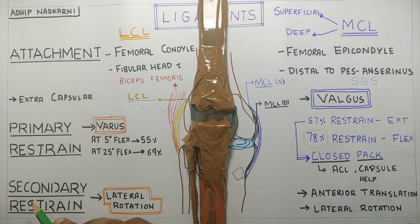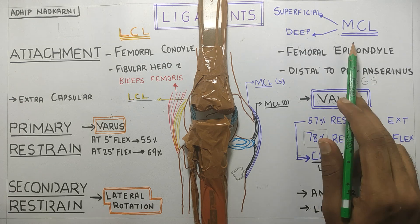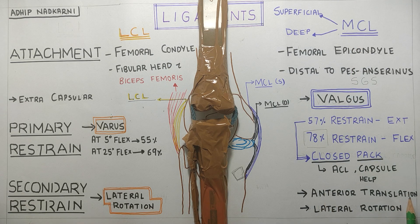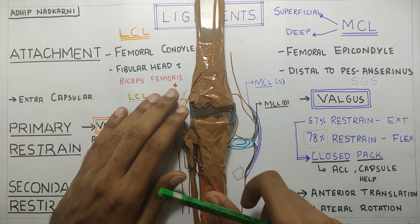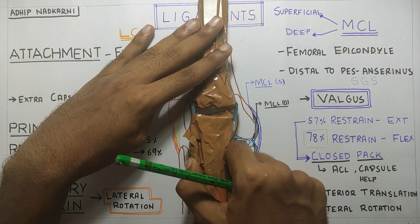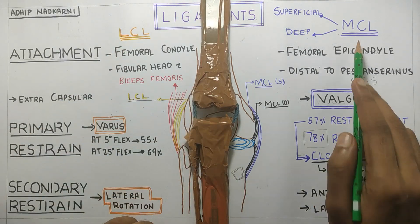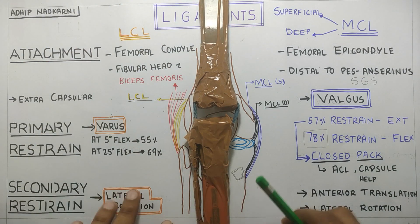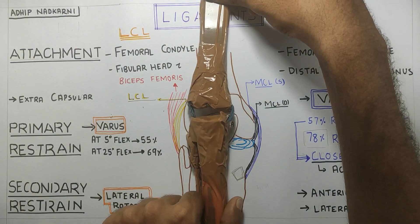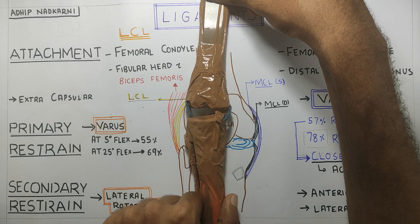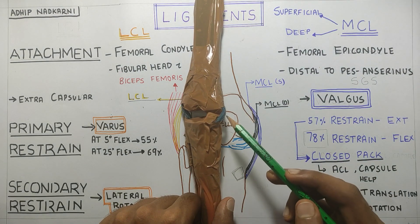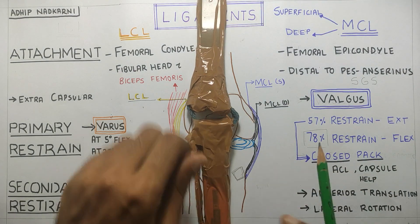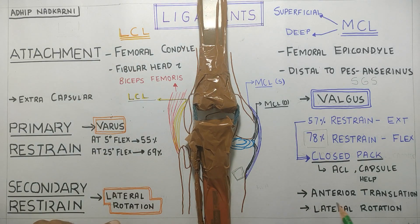The secondary restraint provided by the MCL ligament is anterior translation and lateral rotation. Anterior translation is prevented by MCL, and also lateral rotation — rotation to the lateral collateral side — you can see over here the ligament getting taut, which is provided by the MCL ligament.